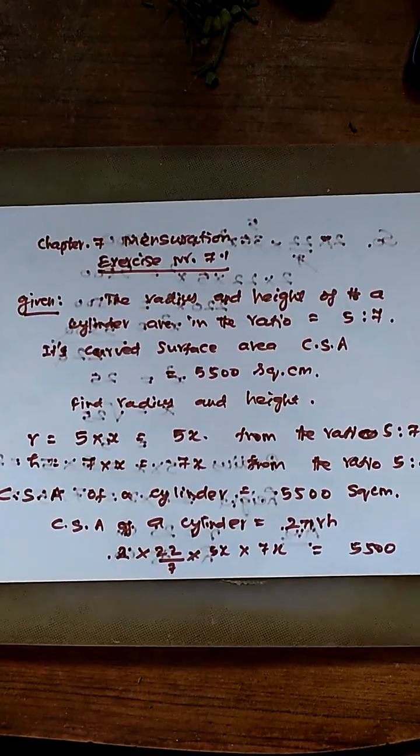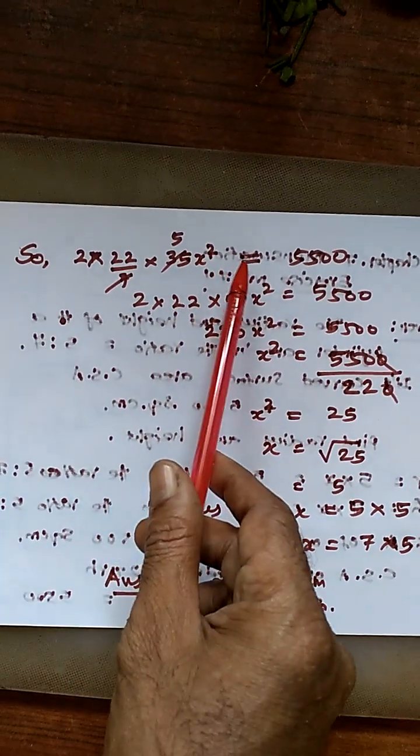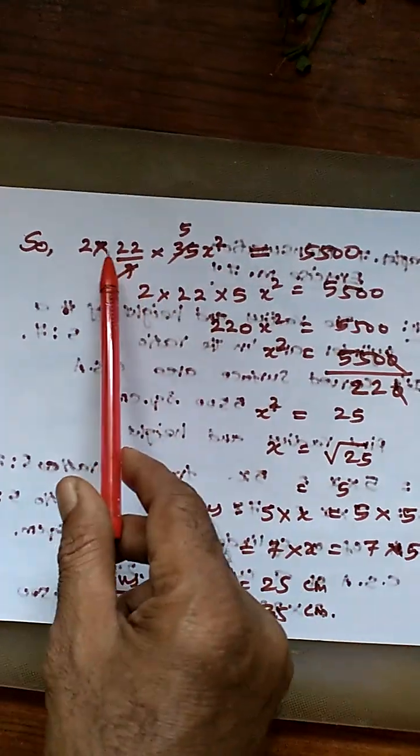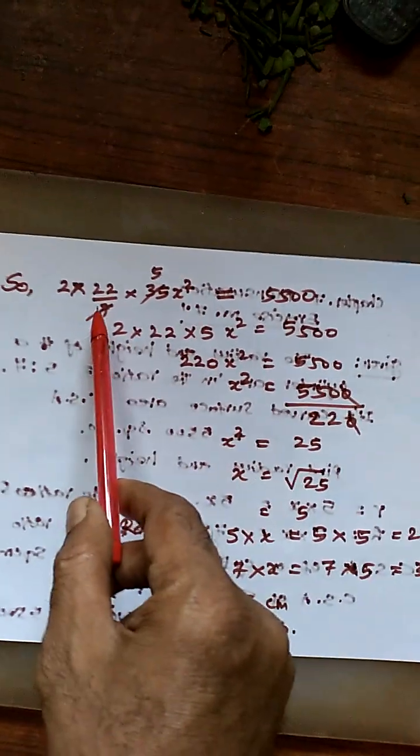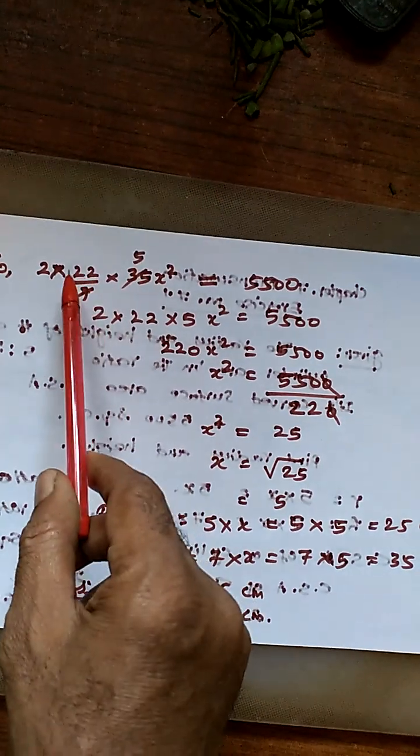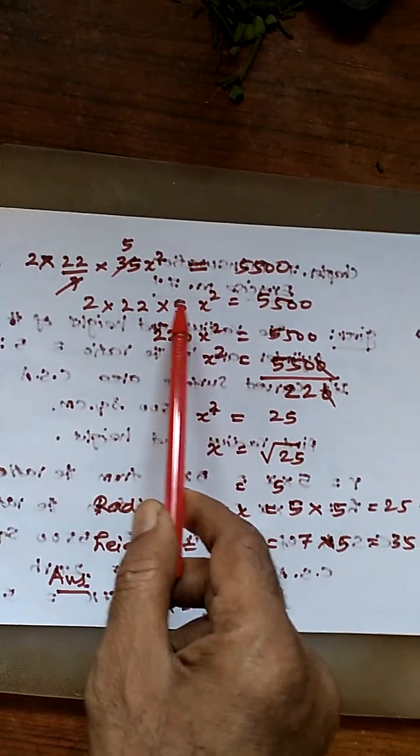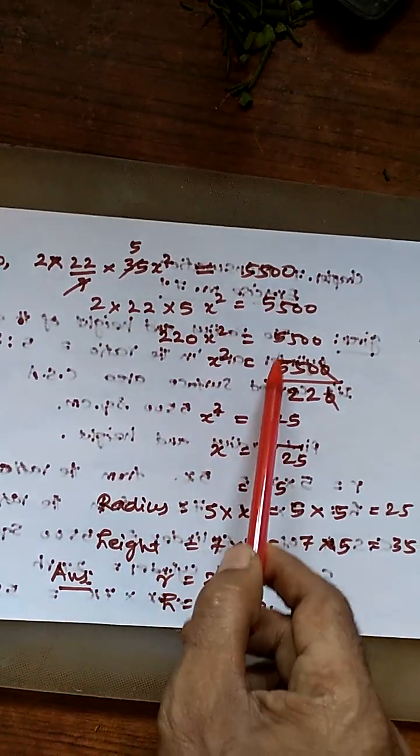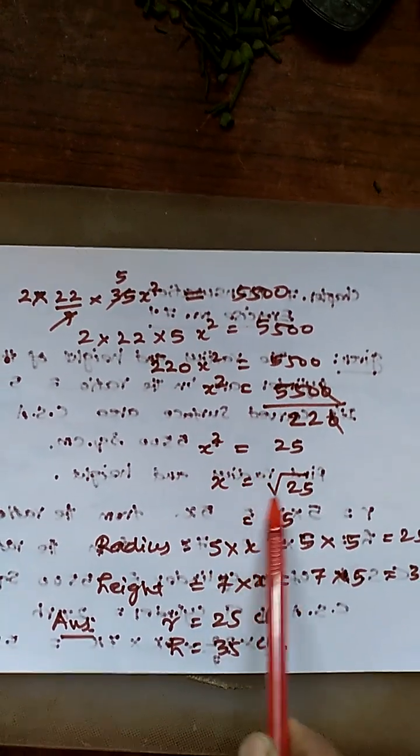Expanding: 2 into 22 by 7 times 5X times 7X. 5 into 7 equals 35. So 2 into 22 by 7 into 35X squared equals 5,500. Simplifying: in the 35, 7 ones are 7, 5 sevens are 35. Solving for X squared equals 25, therefore X equals 5.